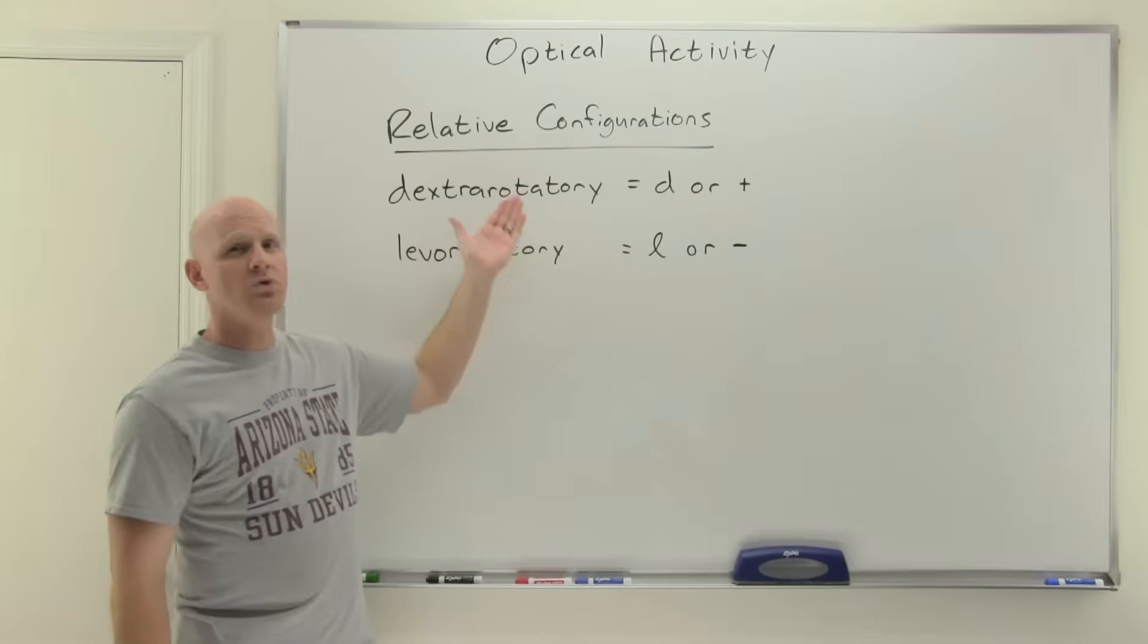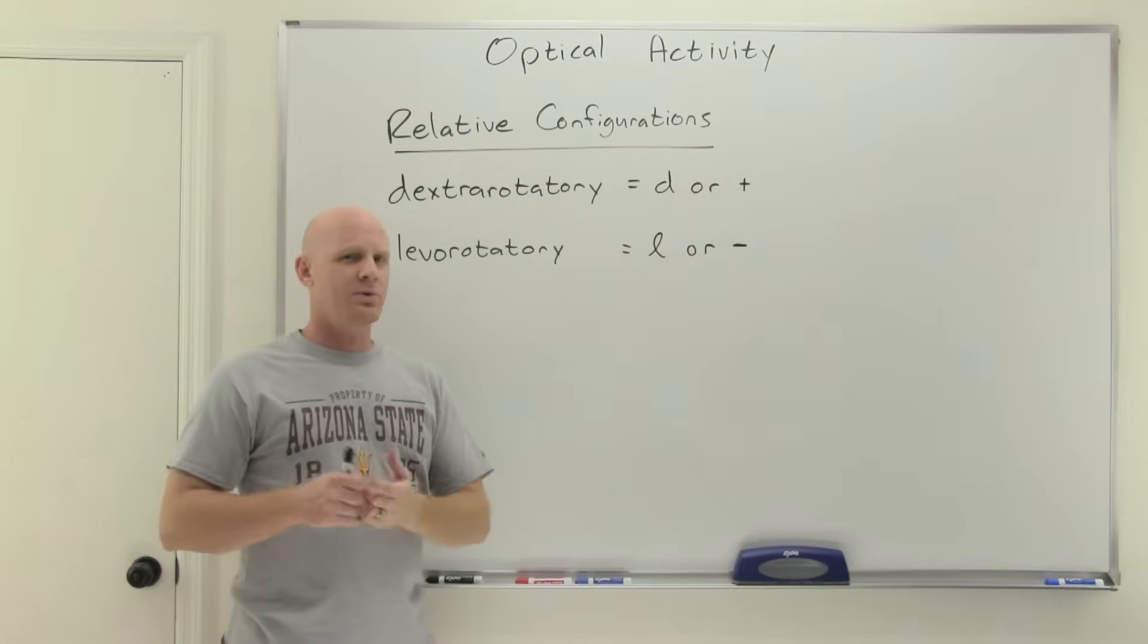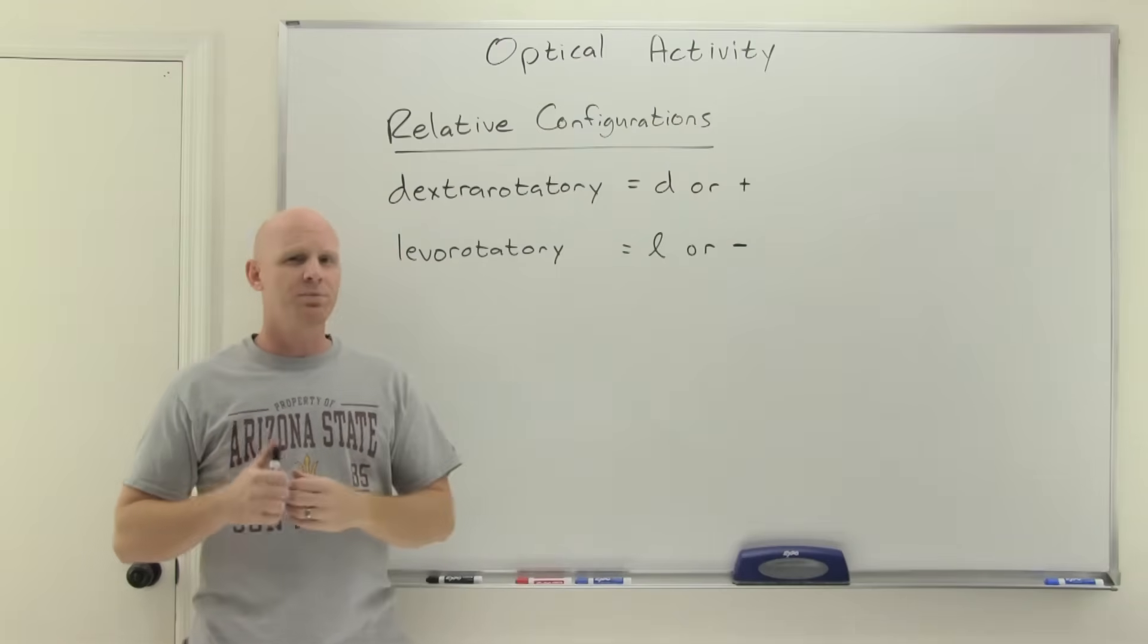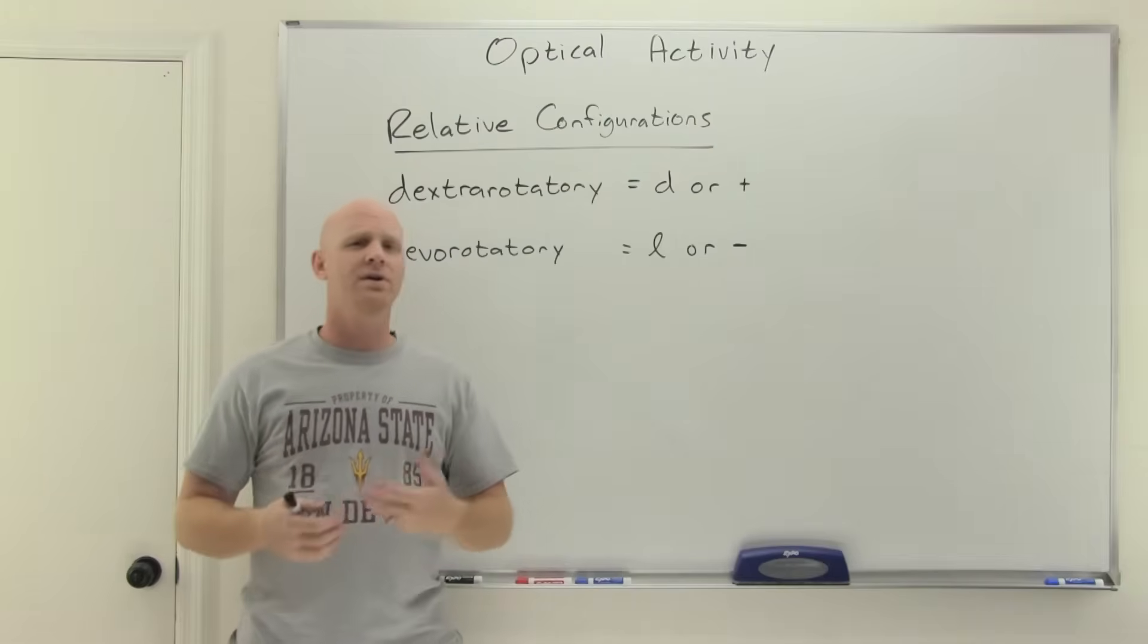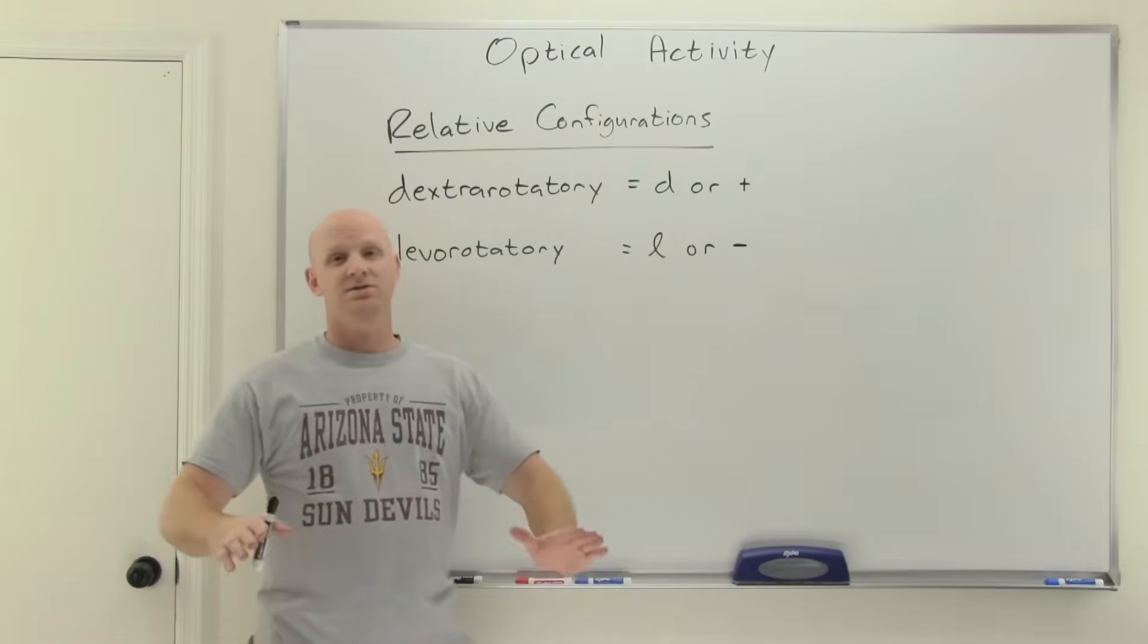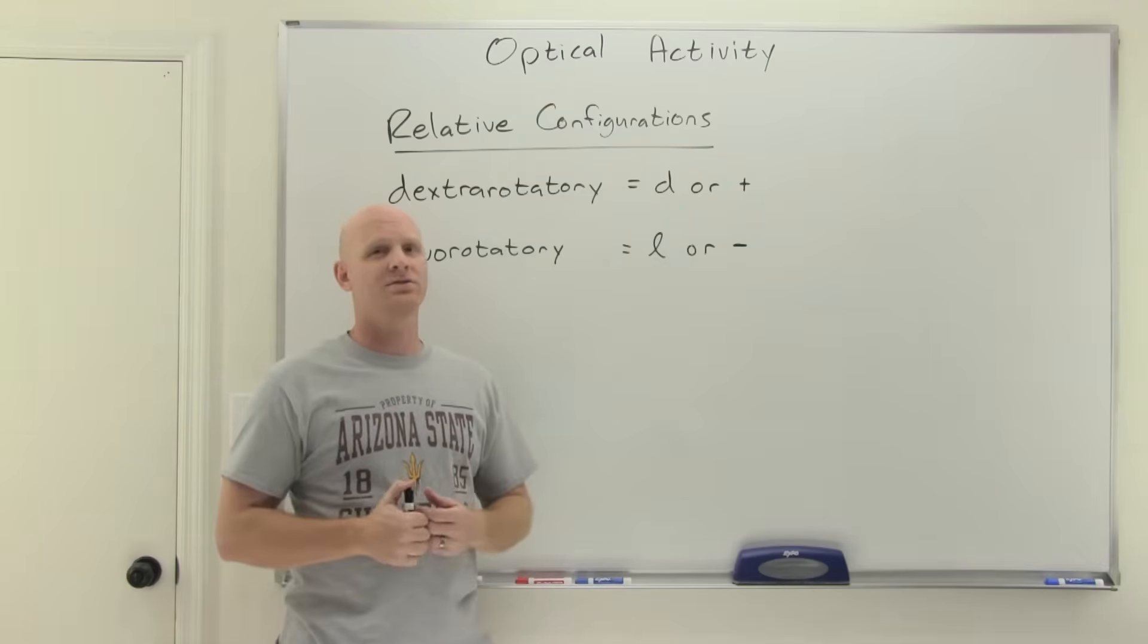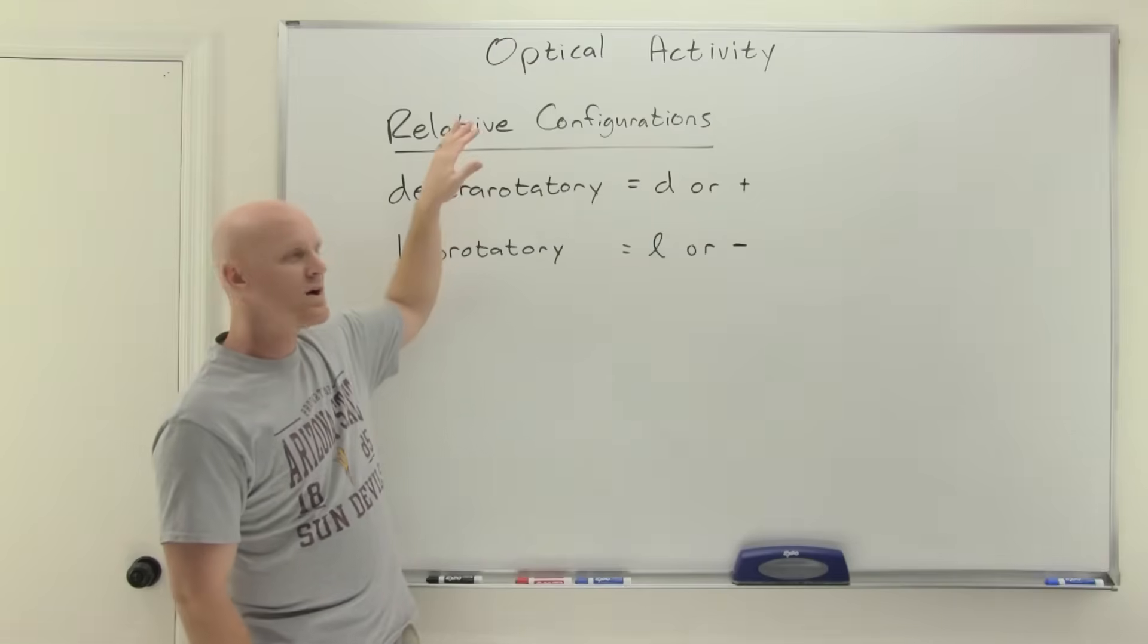So first thing I'm going to talk about are what are called relative configurations. Earlier in this chapter, we already talked about absolute configurations, assigning R and S. And we learned the Kahn-Ingold Prelog system for assigning priorities and learned that when your number four priority is in the back, a right-handed turn is R and a left-handed turn is S. You can totally tell if a structure is R or S based on looking at the structure.